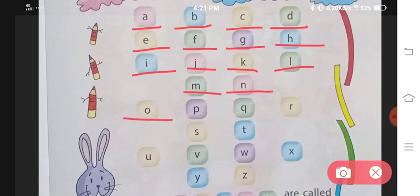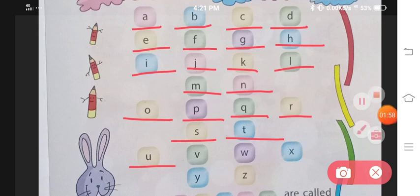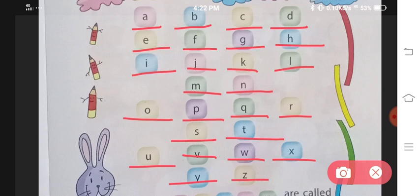M for Monkey, N for Nest, O for Owl, P for Parrot, Q for Queen, R for Rat, S for Ship, T for Tap, U for Umbrella, V for Vlog, W for Watch, X for X-ray, Y for Yak, and Z for Zebra. These are all your alphabets.